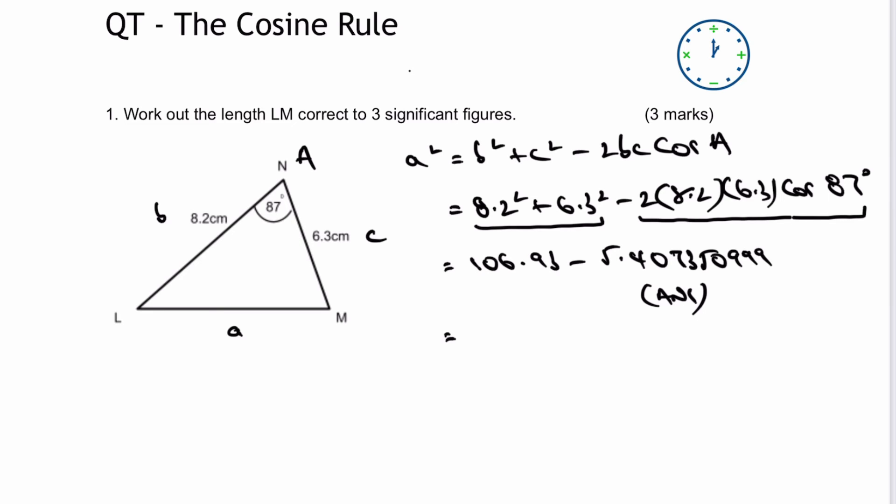So when I carry out my next calculation, it's going to be therefore a squared equals 106.93 take away the answer, which is basically this here. And that would give me a value of a squared. And then if I square root it, a is going to equal 10.07584 and so on.